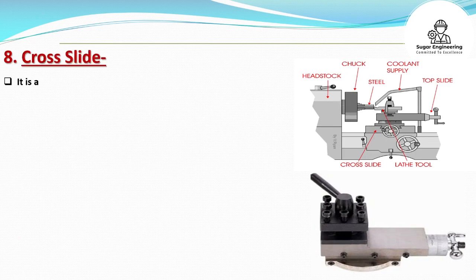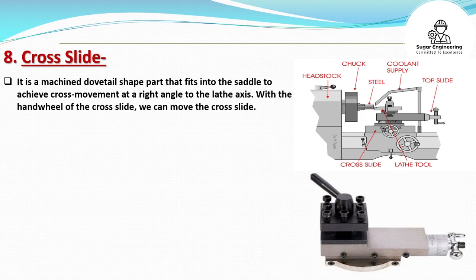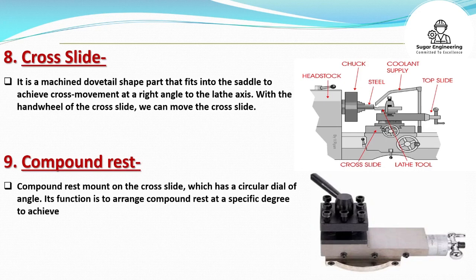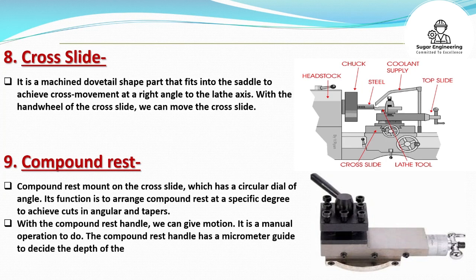The cross slide is a machine dovetail shape part that fits into the saddle to achieve cross movement at a right angle to the lathe axis. With the hand wheel of the cross slide, we can move the cross slide. Compound rest mounts on the cross slide, which has a circular dial of angle. Its function is to arrange the compound rest at a specific degree to achieve cuts in angular and tapers. With the compound rest handle, we can give motion — it is a manual operation. The compound rest handle has a micrometer guide to decide the depth of the cut.